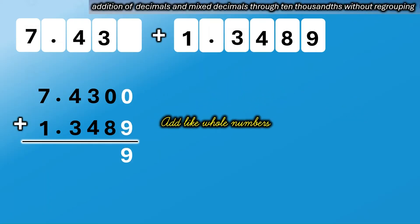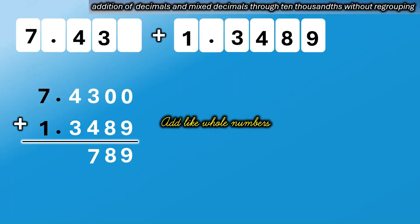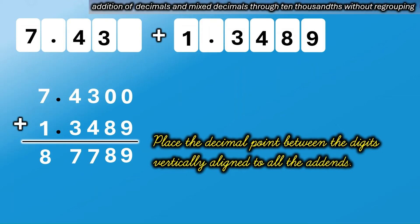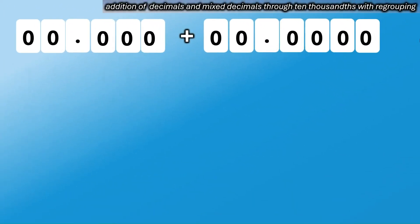0 plus 9 equals 9; 0 plus 8 equals 8; 3 plus 4 equals 7; 4 plus 3 equals 7; 7 plus 1 equals 8. Last step: place the decimal point between the digits, vertically aligned to all the addends. The sum is 8 and 7,789 ten-thousandths.